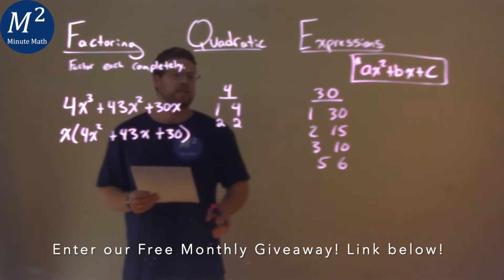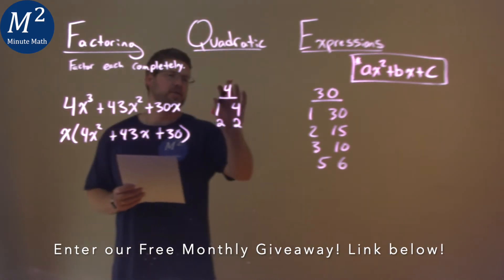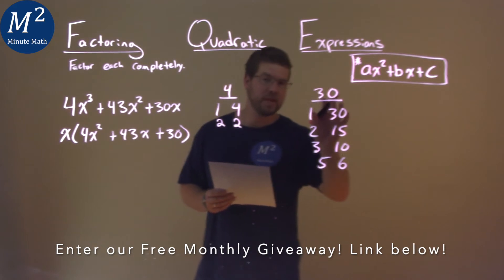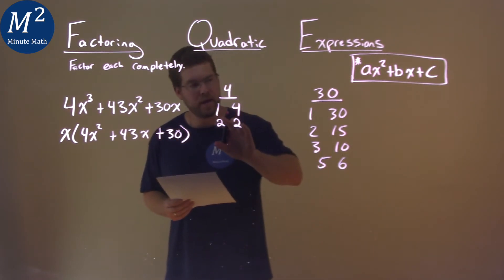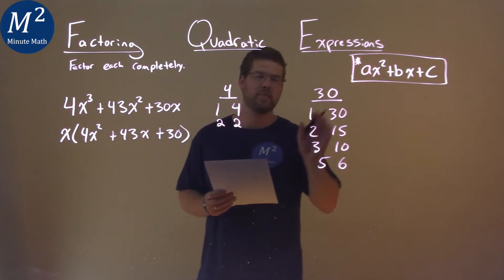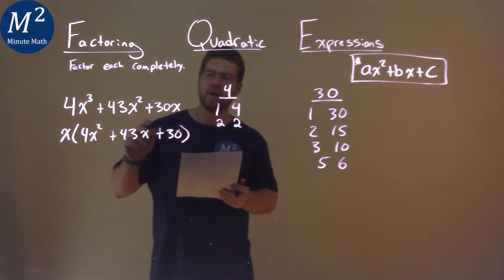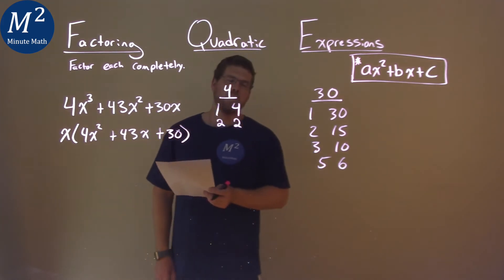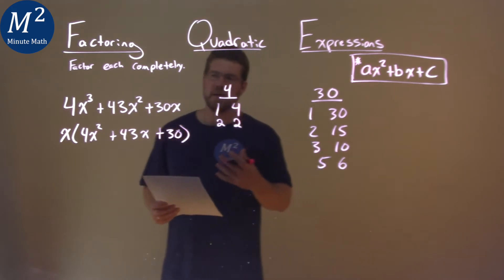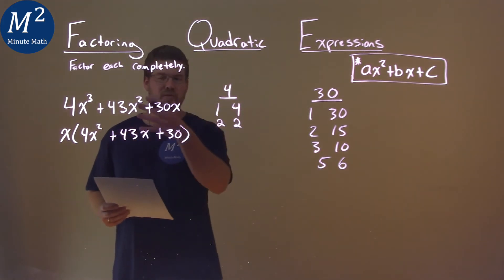And what I'm looking at here is I want to take one of the pairs from a, multiply it by one of the pairs from c, add it to one of the pairs by a, add it to one of the pairs by c. And we want to try to get our b value, which is 43. So instead of testing every possible one, I'm trying to make an educated guess and try to get something that's close to 43.